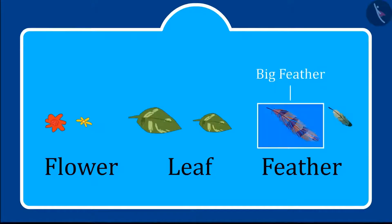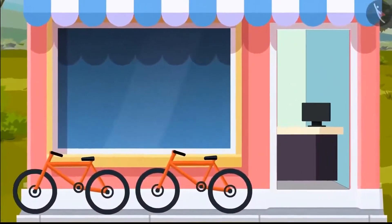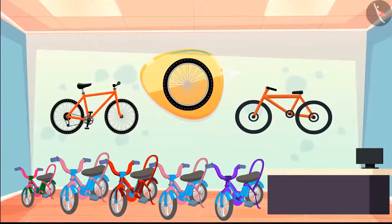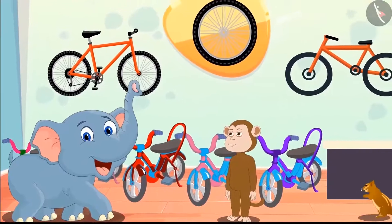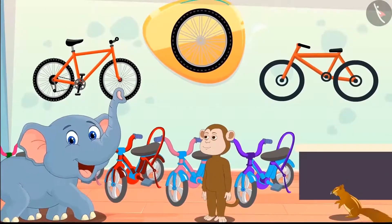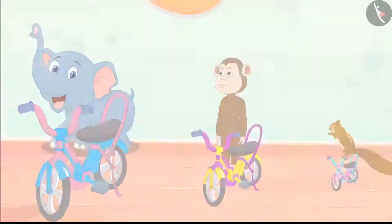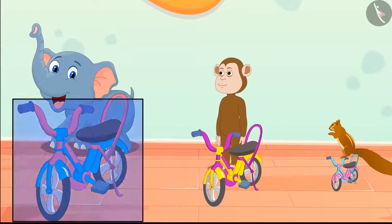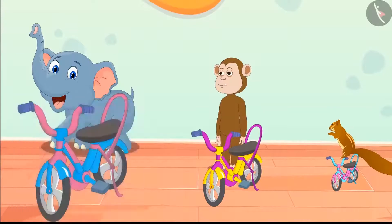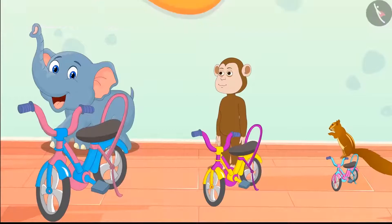A new bicycle shop opened in the forest and all animals were very excited. The elephant, monkey, and squirrel all went to buy bicycles from the shop. Here are the bicycles they bought. Can you tell which bicycle is whose? The biggest bicycle is for the elephant because it is the largest among the three animals. So kids, can you tell which is the squirrel's bicycle?